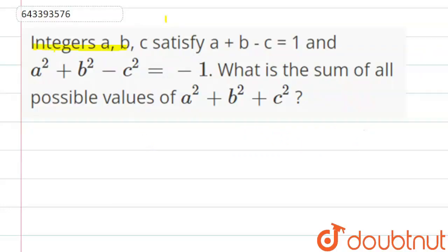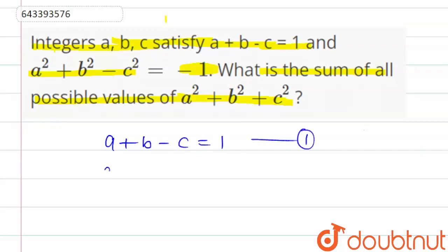Question: we have integers a, b, c satisfying a plus b minus c equal to 1, and a squared plus b squared minus c squared equal to minus 1. This is equation number 1 and the second equation respectively.